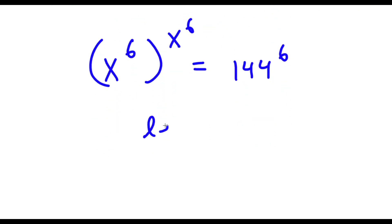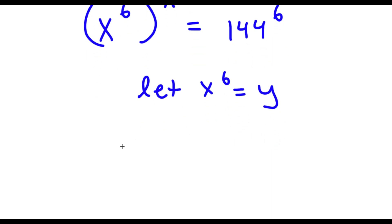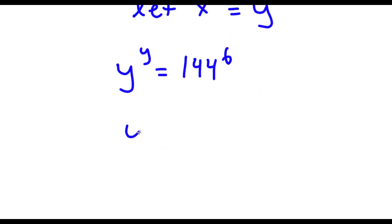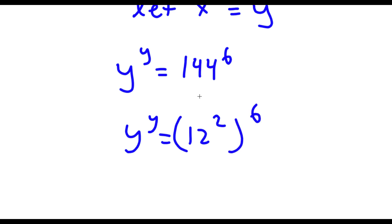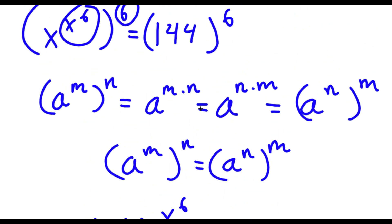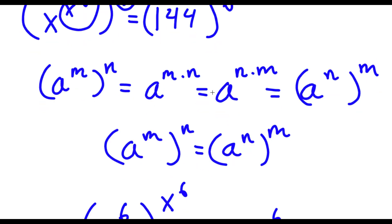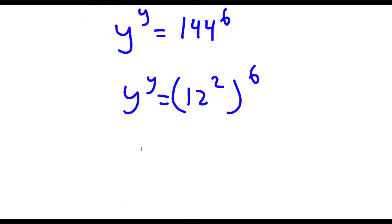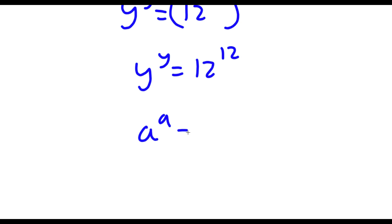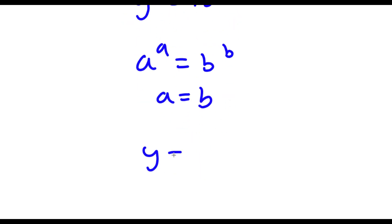Now I'm going to let x to the power of 6 equal the variable y. So now I have y to the power of y is equal to 144 to the power of 6. Now 144 is the same thing as 12 to the power of 2, so I have 12 to the power of 2 to the power of 6. And since a to the power of m to the power of n equals a to the power of m times n, 2 times 6 is 12. So I have y to the power of y is equal to 12 to the power of 12. Now if a to the power of a equals b to the power of b, then a equals b. So in this case y is equal to 12.